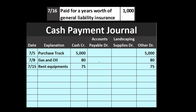On 7-16, we paid for a year's worth of general liability insurance: $1,000. We record 'insurance' as the explanation; cash goes down as always. The other side once again goes to 'other' — in this case, prepaid insurance. Looking back, for the truck purchase the 'other' account would be something like auto as a fixed asset — property, plant and equipment. For gas and oil it would be auto expense.